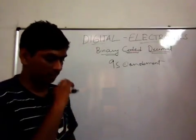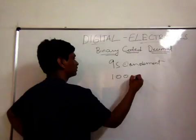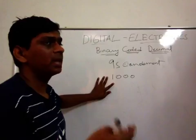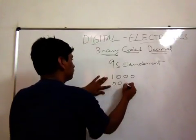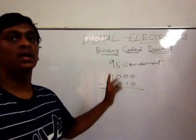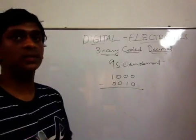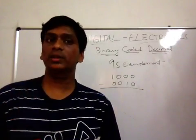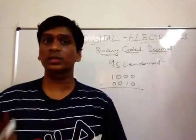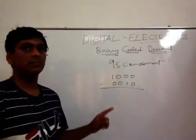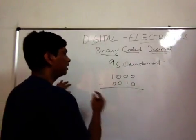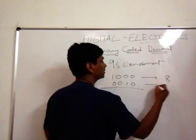Here I have a binary coded decimal number: 1000, and another BCD number: 00010. I have to subtract these two BCD numbers. Let me start with single digits first. I will convert these into normal decimal form — 1000 in decimal is eight, and 0010 is two. So this is 8 minus 2, and I have to find the difference using the nines complement method.